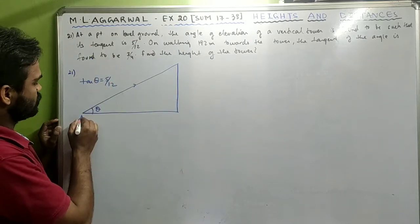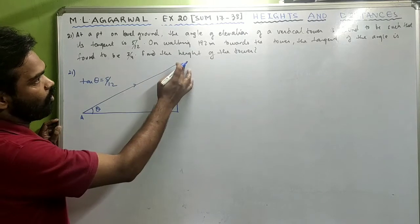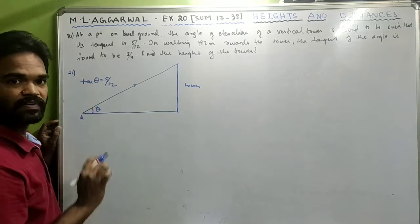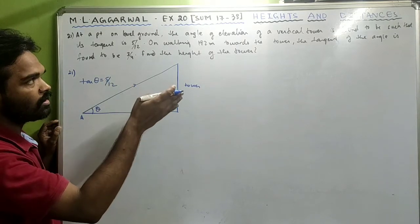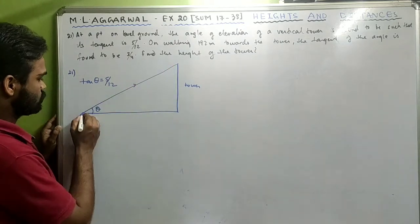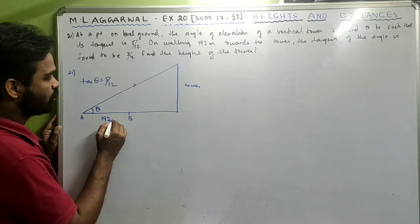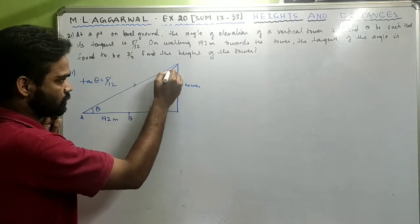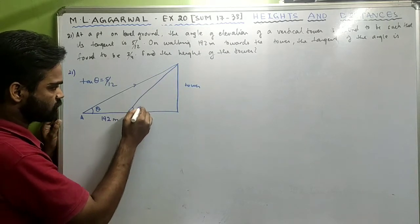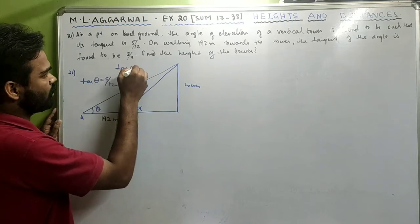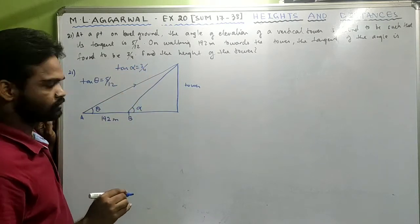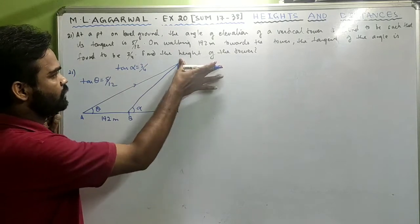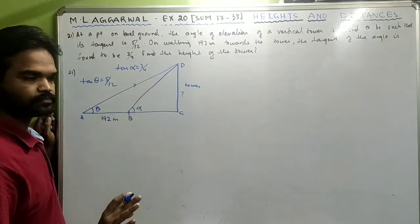On walking 192 meters toward the tower, the tangent of the angle changes to 3/4. Suppose the new angle is alpha, so tan α = 3/4. Label points A, B, C, D. DC is common to both triangles. In triangle BCD, tan α = DC/x, so 3/4 = DC/x, giving DC = 3x/4. In triangle ACD, tan θ = DC/(192 + x), so 5/12 = DC/(192 + x), giving DC = 5(192 + x)/12.